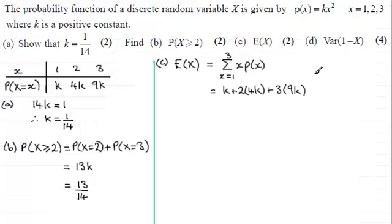If we just come down here, then E(X) equals, we've got a total of k plus 8k plus 27k, that makes 36k. And knowing that k is 1/14th, this is going to be 36/14ths. Or you could cancel top and bottom by 2, and you get 18/7ths. That's E(X).